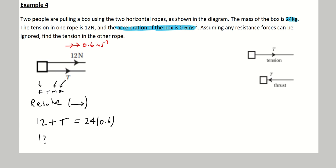So let's go ahead and solve this. I'm going to have 12 plus T, and then 24 times 0.6 is 14.4. Then I'm just going to solve for T. 14.4 take away 12 is 2.4. And that's the answer to this question.